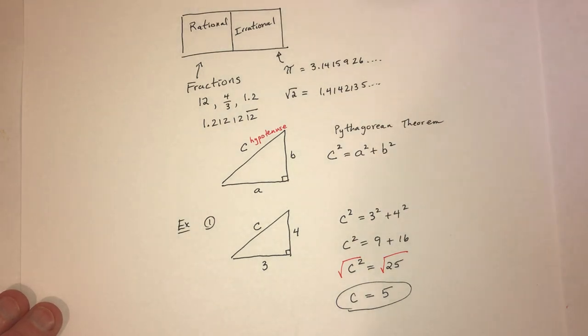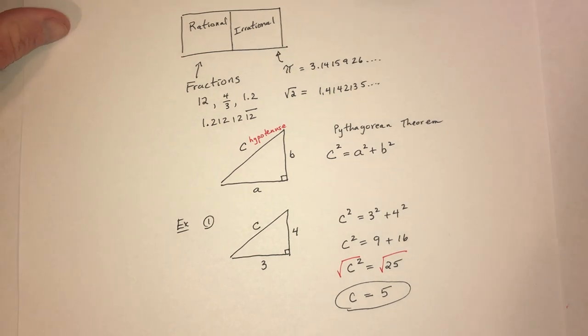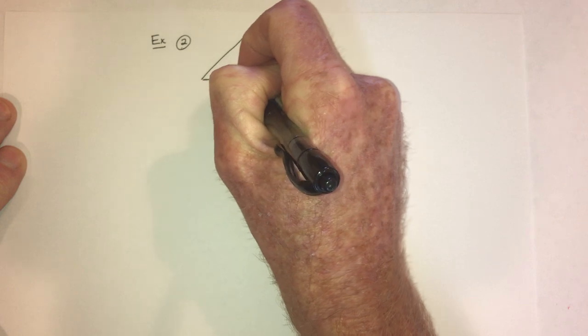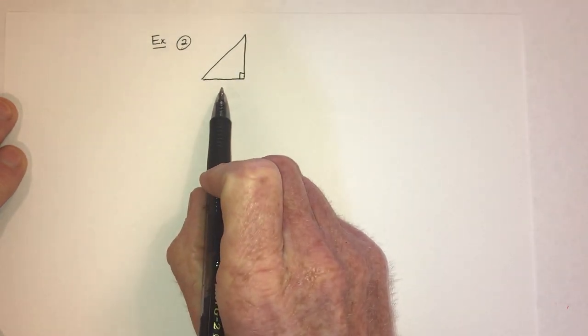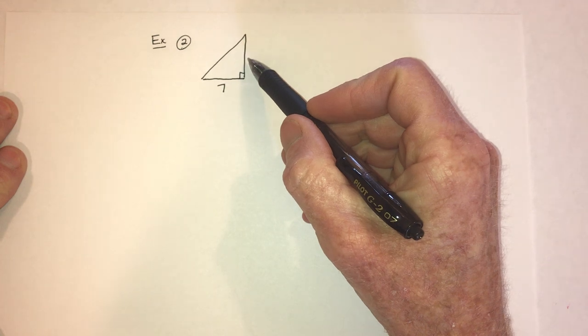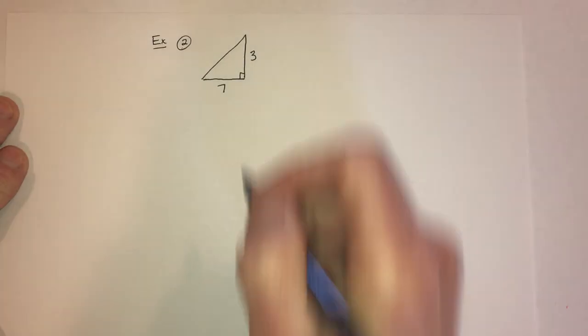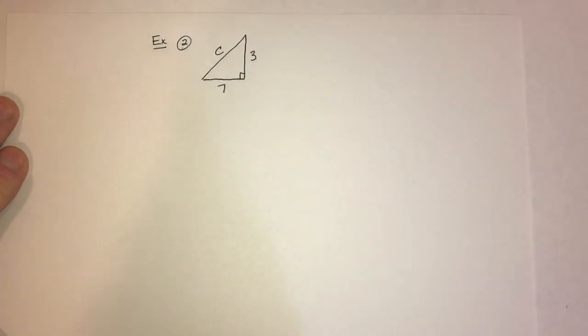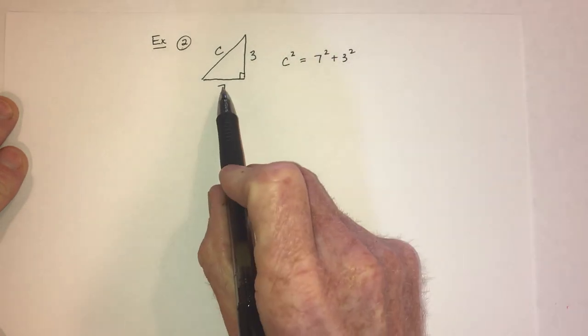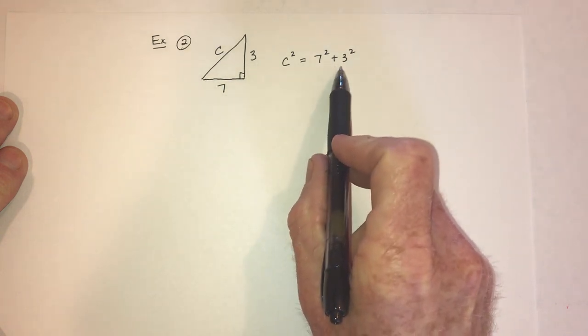Is it possible to get an irrational number? The answer is yes — you're actually more likely to get an irrational than a rational. There are a lot more irrational numbers than rational ones. For example, suppose you have a right triangle with legs 7 and 3. Then c squared equals 7 squared plus 3 squared. The order of the two legs doesn't matter, but c must be the hypotenuse — the biggest side.